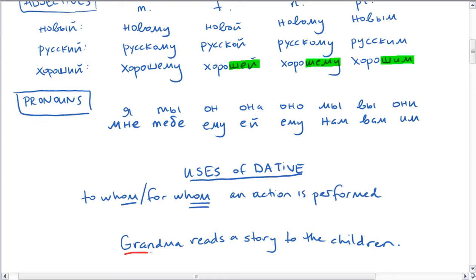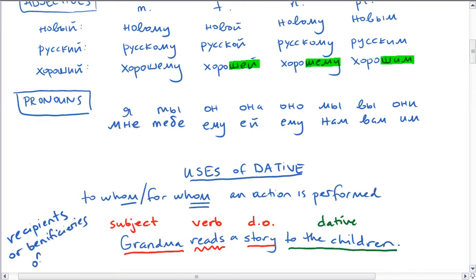So let's look at a sentence in English and get our grammar figured out. We've got grandma reads a story to the children. So in this sentence, grandma is the subject. She's the person doing something. And what is she doing? She's reading. So that's our verb or predicate. And our direct object is what she's reading - a story. So that's our direct object.